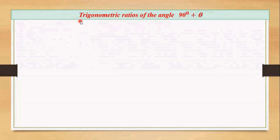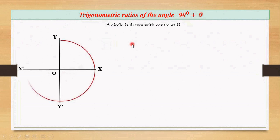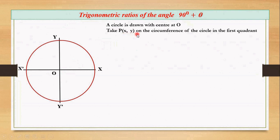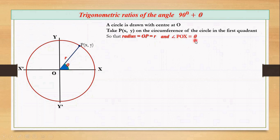Now let's work to find the trigonometric ratios of the angle 90 degree plus theta. For this, let's take a coordinate axis and a circle drawn with the center at origin, and a point P(x, y) is taken on the circumference of the circle in the first quadrant, such that the radius OP equals r and angle POX equals theta.